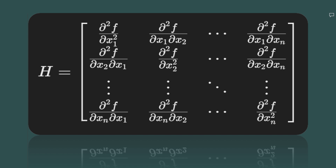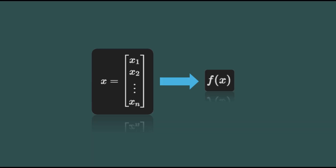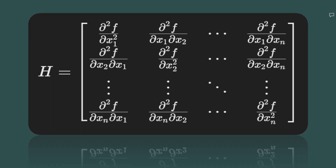First, what is the Hessian matrix? Imagine you have a scalar-valued function, which we will call f, that depends on multiple inputs. The Hessian matrix organizes all the second-order partial derivatives of this function. Simply put, it tells us how the rate of change of the function itself changes with respect to the inputs. This is particularly useful in optimization because it helps us determine whether a point is a minimum, maximum, or saddle point.